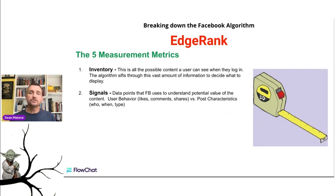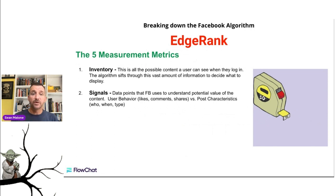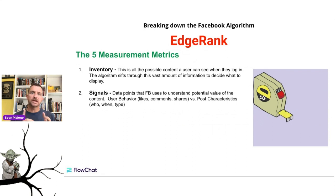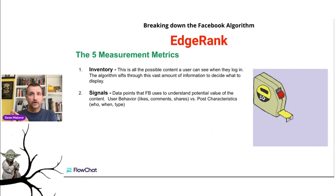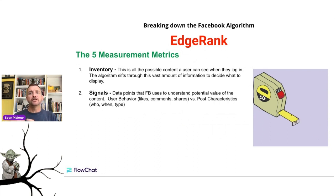What is a signal? It's a user behavior, like a comment or a share, versus post characteristics — like who made the post, when they made it, and what type of post it was. It evaluates signals on two different features: the person looking at the content — are they liking, commenting, and sharing — but also the post characteristics. Who you're posting for, when you post, and the type of post you make: is it a video, a picture, or just a phrase? Those are the kinds of signals that Facebook will read, evaluate, and then put into the algorithm in your favor or against you.